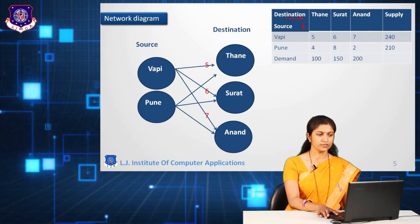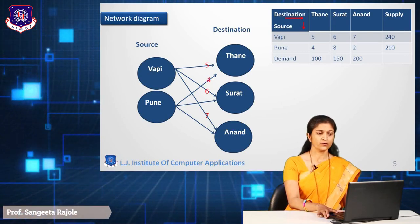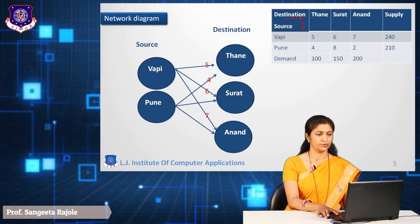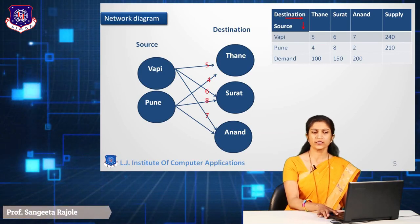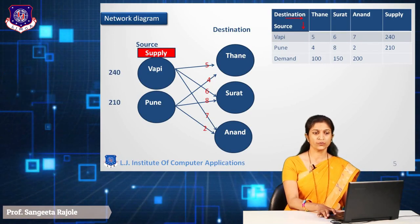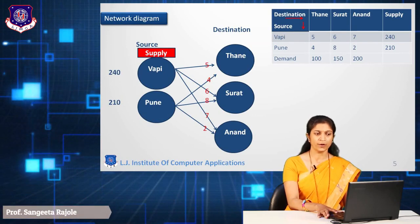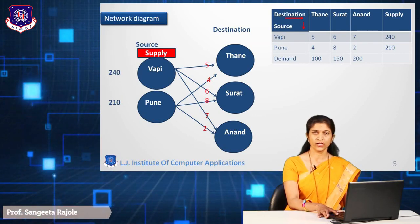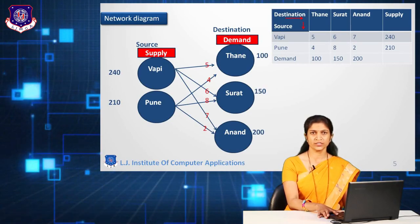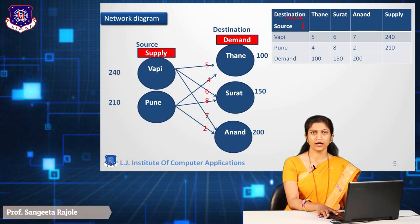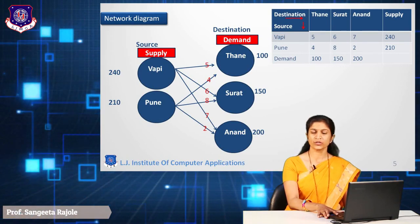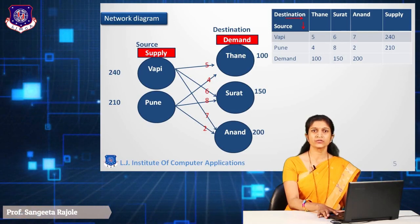Likewise for source Puni: transfer from Puni to Thane costs 4 rupees per unit, from Puni to Surat costs 8 rupees, and from Puni to Anand costs 2 rupees. The supply column shows Wapi has a supply of 240 and Puni has a supply of 210. The demand row shows: Thane demands 100 units, Surat demands 150 units, and Anand demands 200 units.